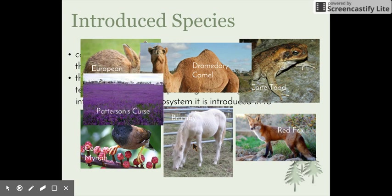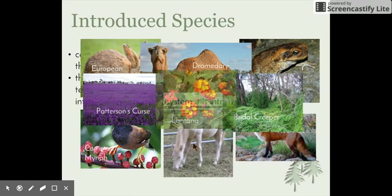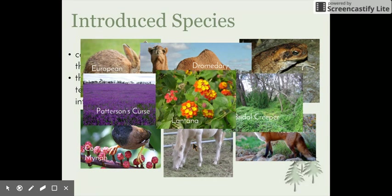Some introduced plant species include Patterson's curse — fields of purple flowers that look nice but are a weed and a pest — and bridal creeper, which takes up a large amount of space, taking away natural resources such as light, water, and nutrients from other plants. Lantana is another introduced plant species. In class, we'll be looking further at how introduced species have led to different consequences for our native species.